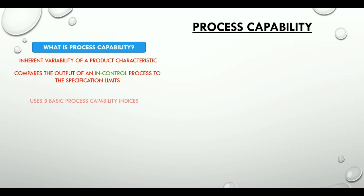There are three basic process capability indices: CP, CPK and CPM. And all these are dimensionless numbers.